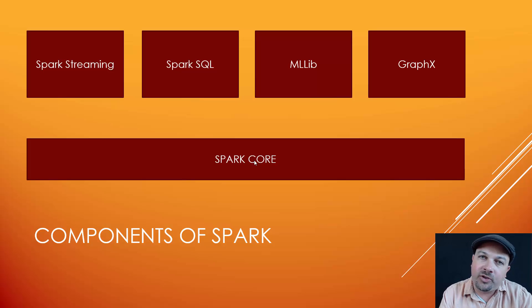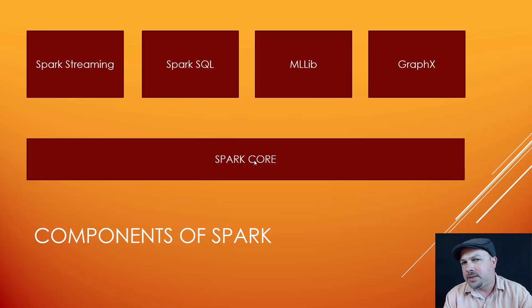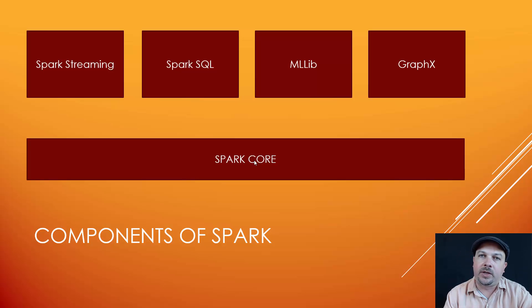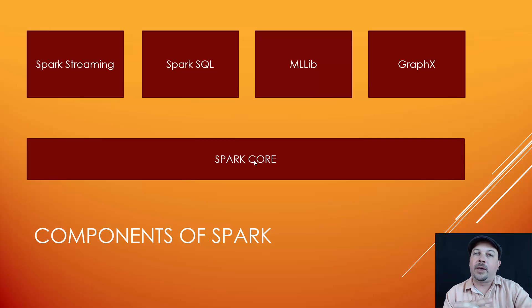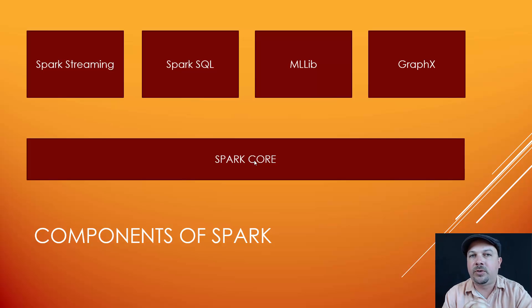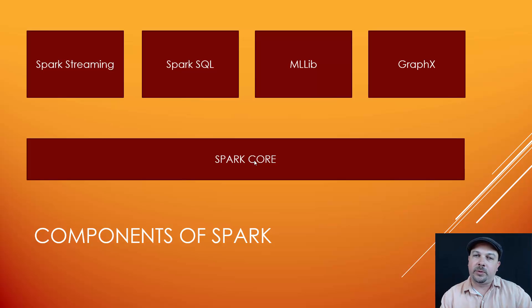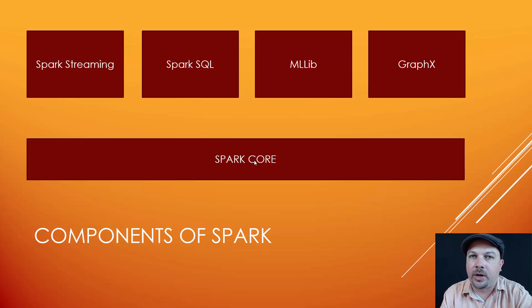MLlib lets you do machine learning operations on massive data sets. It's a little bit limited in what it can do today but it's always getting better. If you need to do things like a linear regression or recommend items based on user behavior, MLlib has built-in routines to do that automatically and distribute that across a cluster so you can perform machine learning on truly massive data sets in a very efficient manner.